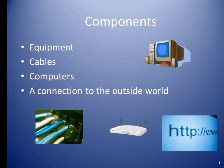We'll start with the basics. Some of the components that might be considered the building blocks of a network are equipment, such as routers and switches, cables or the cabling, computers, and a connection to the outside world. Usually, this is via an Internet Service Provider or ISP.